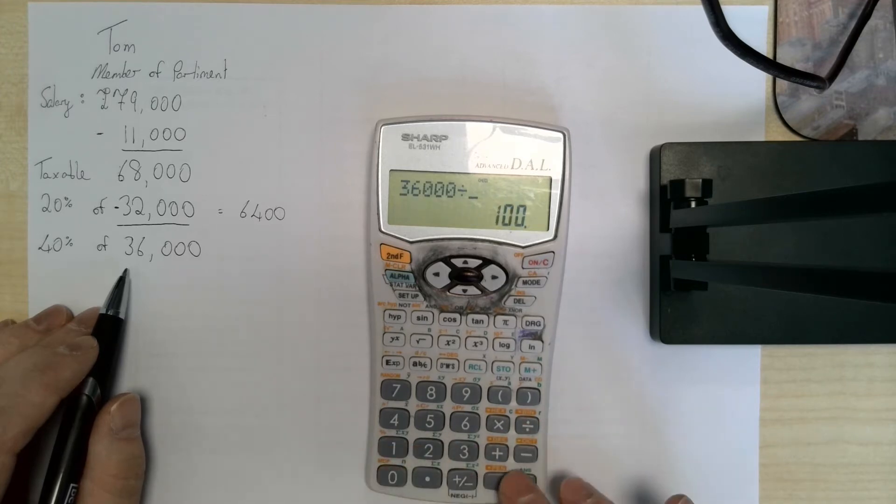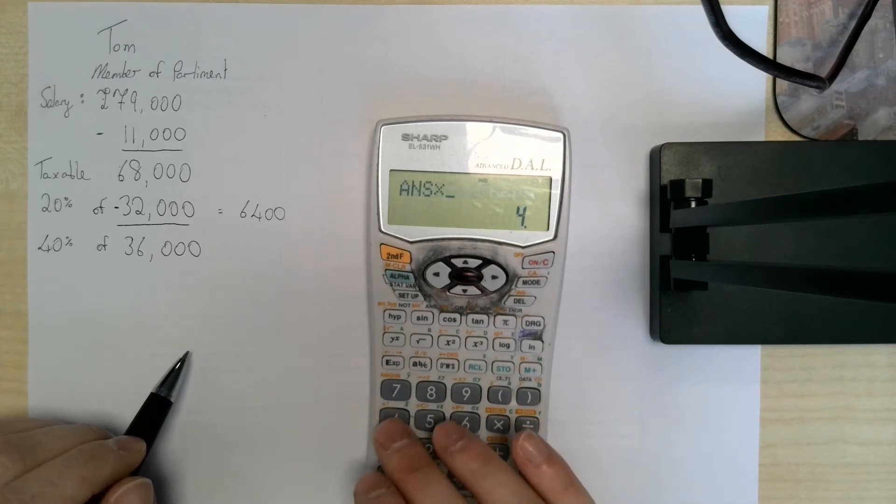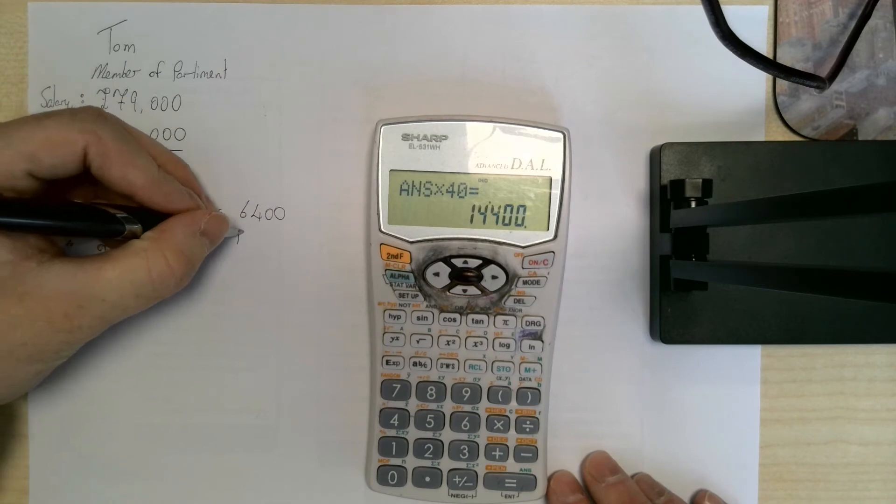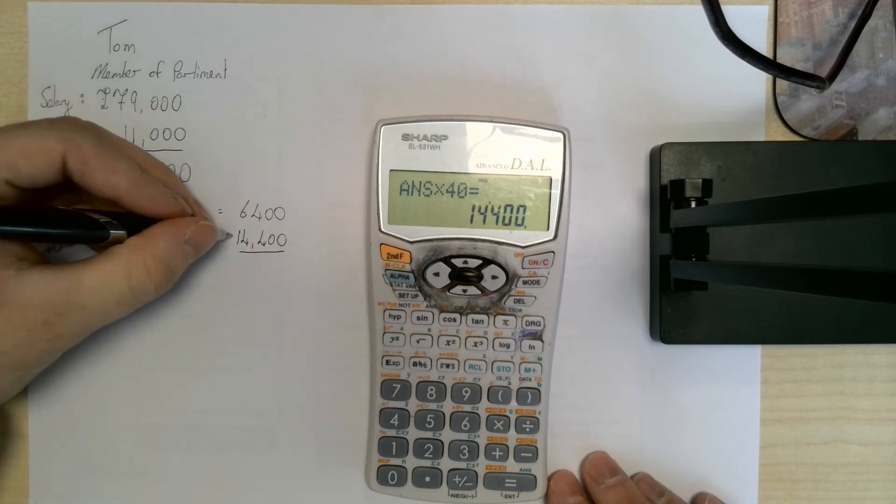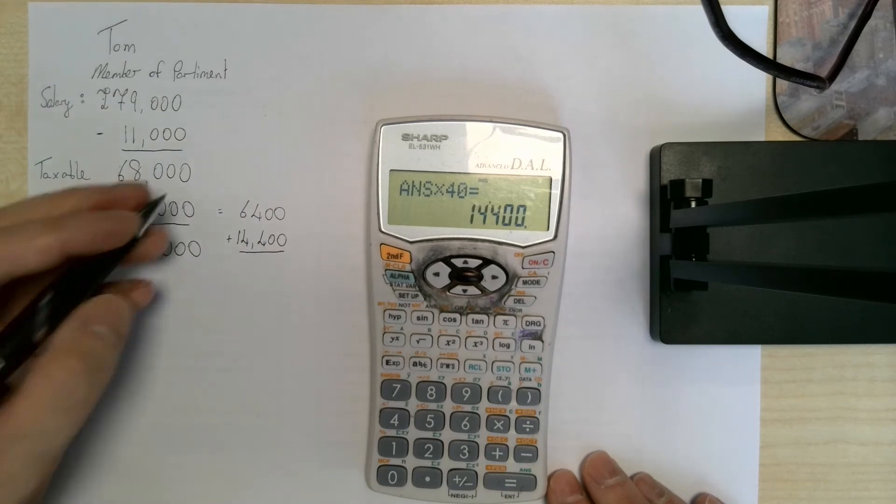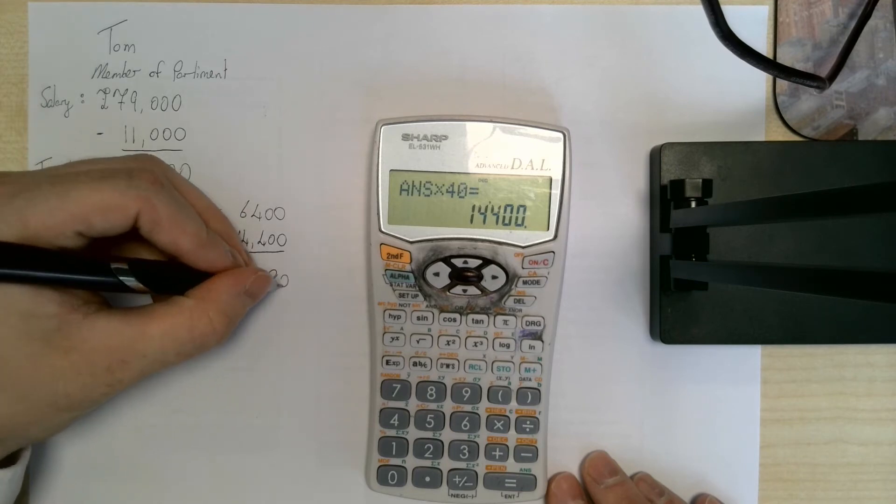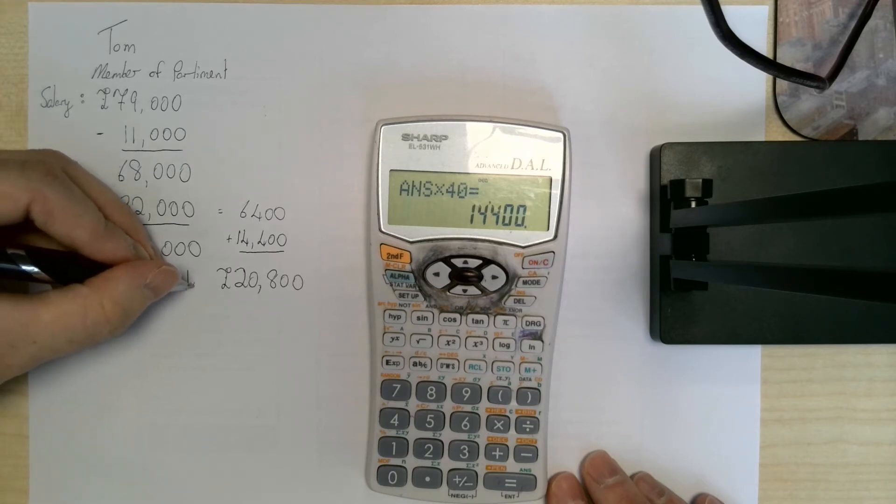So it's £36,000 divided by 100, that's 1%, multiplied by 40 because it's 40% we're looking for, we've got £14,400. This is the tax he's going to pay: £6,400 and £14,400, so all together he'll pay £20,800. That is the total tax due.